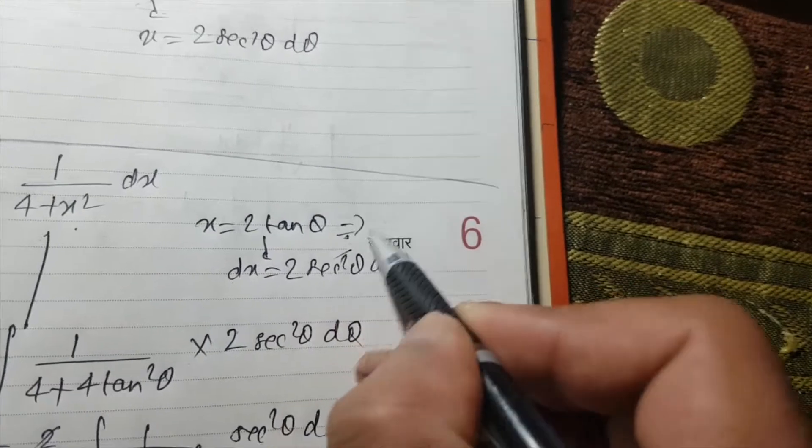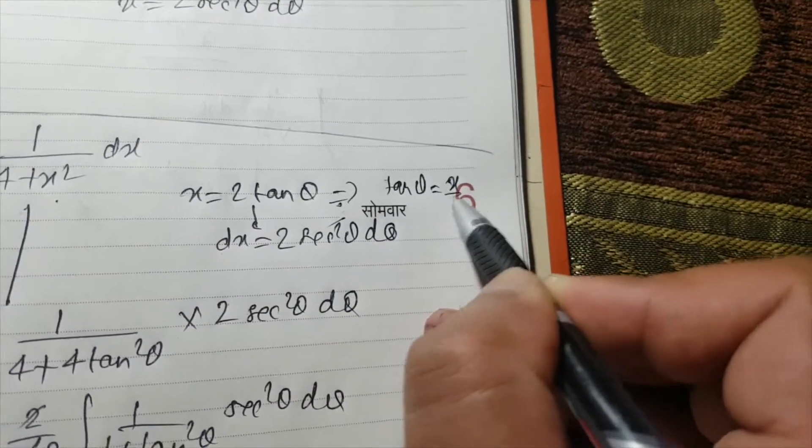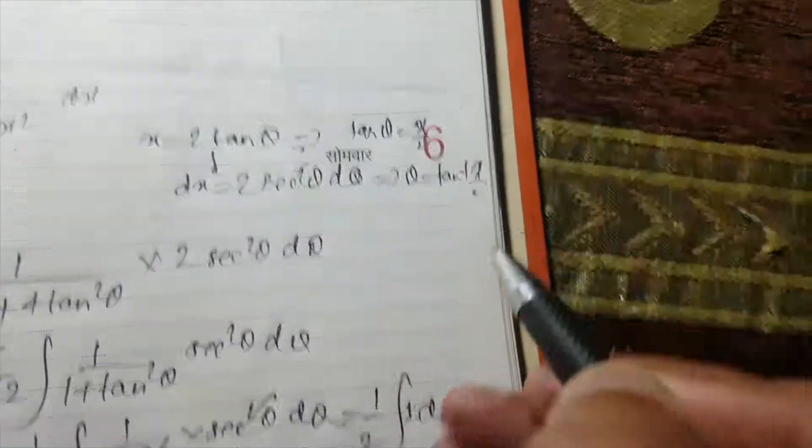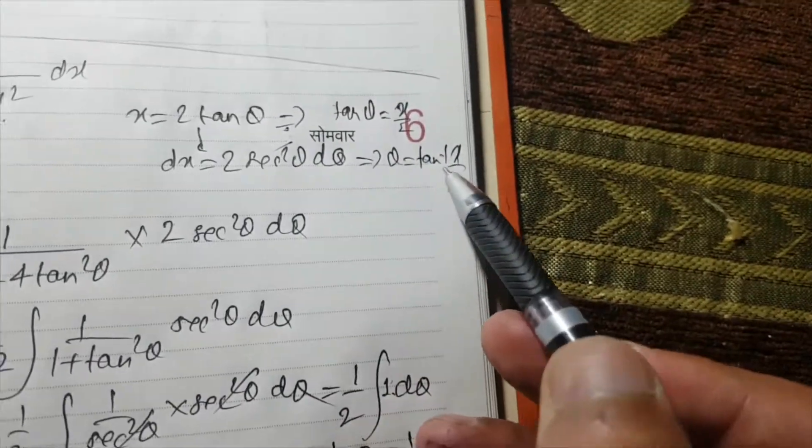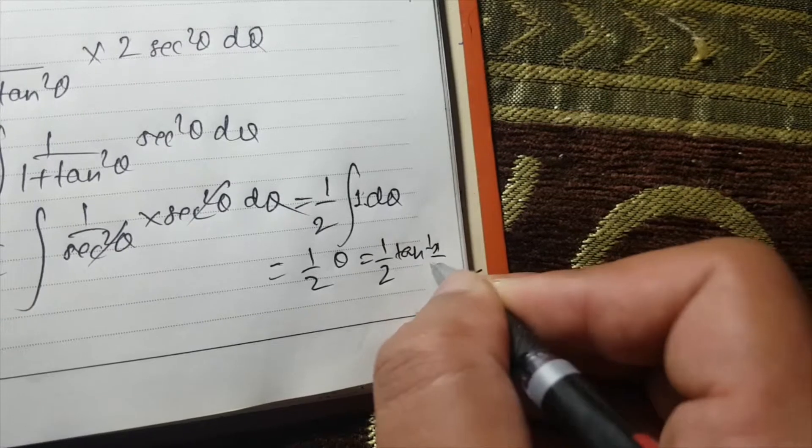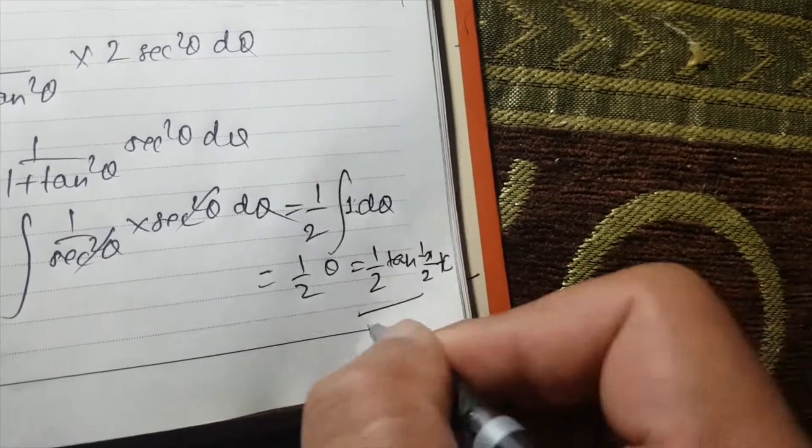Now from here, we will write tan theta is equal to x upon 2. Simplify: theta is equal to tan inverse x upon 2. So our theta is tan inverse x upon 2. We will place here tan inverse x upon 2 plus c, the constant of integration. So this is our answer.